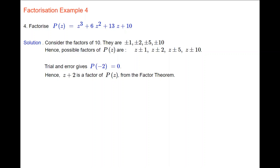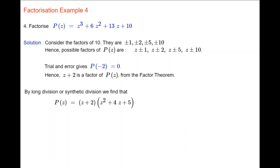We use trial and error to find the first factor. Trying p(1), p(−1), and p(2) — none of these equal zero. But when we substitute minus 2 into p(z), the whole expression works out to zero. By the factor theorem, z plus 2 is a factor of p(z). We then divide z plus 2 into p(z) using long division or synthetic division, and we get the quotient z squared plus 4z plus 5.